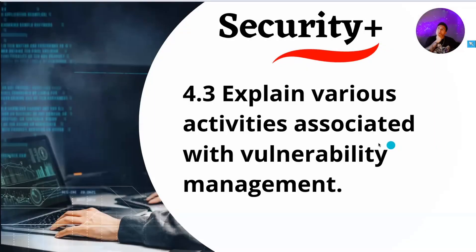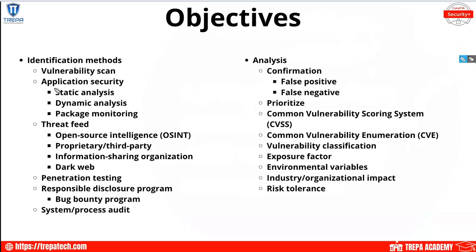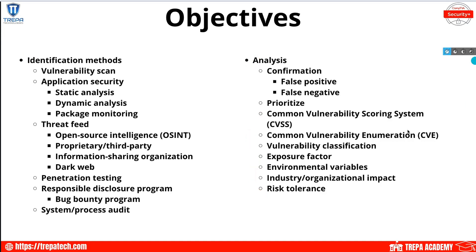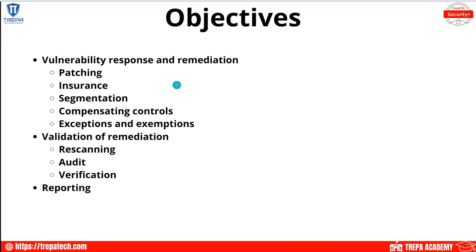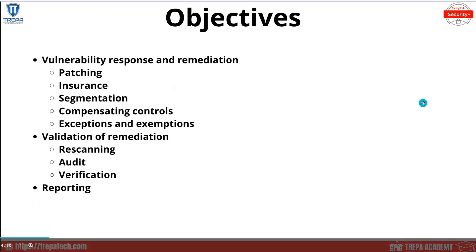Now let's go over domain 4.3: explain various activities associated with vulnerability management. In these objectives, we're going to cover how we identify different vulnerabilities, the analysis and scoring of vulnerabilities, common vulnerability enumeration, how we describe and classify them, and anything else related to managing and describing vulnerabilities. Then we'll go over vulnerability response, how we validate remediation, and reporting of vulnerabilities.